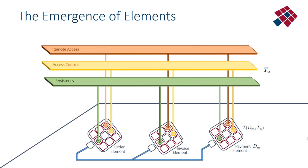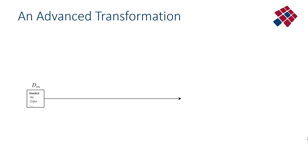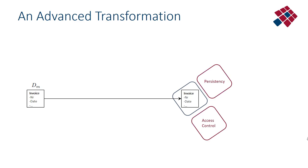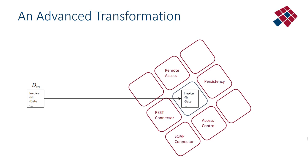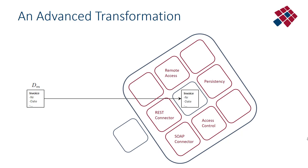This is what we call the emergence of elements. For every functional entity you don't only need a single software module — the main class implementing that functional entity — but you need a set of classes centered around this central class. This implies a more advanced transformation: instead of transforming a functional entity into a single class, we implement it using several classes — a whole set of classes around this central main class, providing an interface as well. This set of classes we call an element.